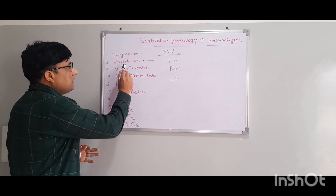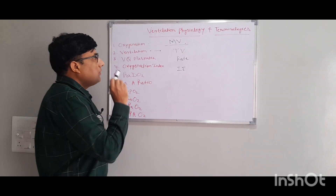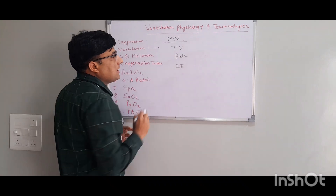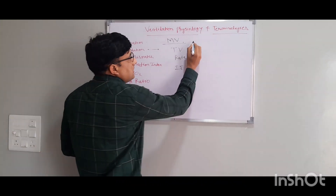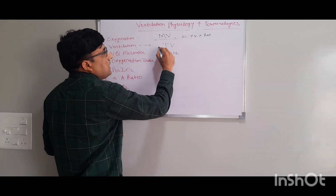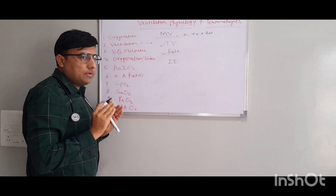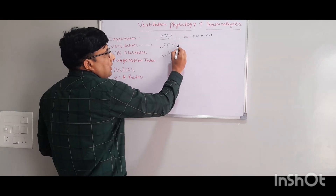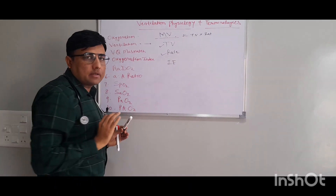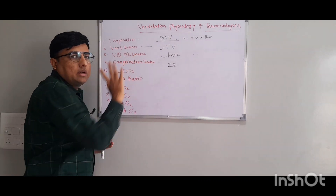Now the second point is ventilation. Ventilation is the washout of CO2, and it depends on minute volume. In conventional ventilation, minute volume equals tidal volume multiplied by rate. So minute volume depends on tidal volume and rate. If you want to increase ventilation — that is, increase CO2 washout — then you have to either increase tidal volume or increase the rate, which will increase minute volume.